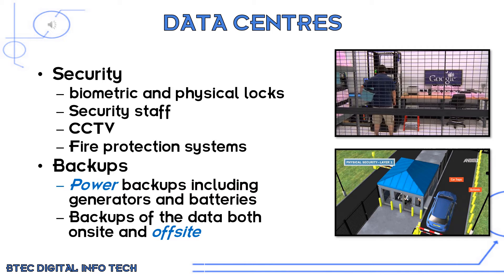One thing some people worry about with the cloud is whether their data is secure. What data centers do is maintain quite a lot of security — some have six or seven levels. First there is a physical layer: to even gain access to the data center you need to get through physical security, including security guards, bollards, barriers, special access cards, and people to let you in. Once inside, all secure files are held in cages where you need special cards, and sometimes it scans your eye or fingerprint — these special locks are sometimes called biometric.